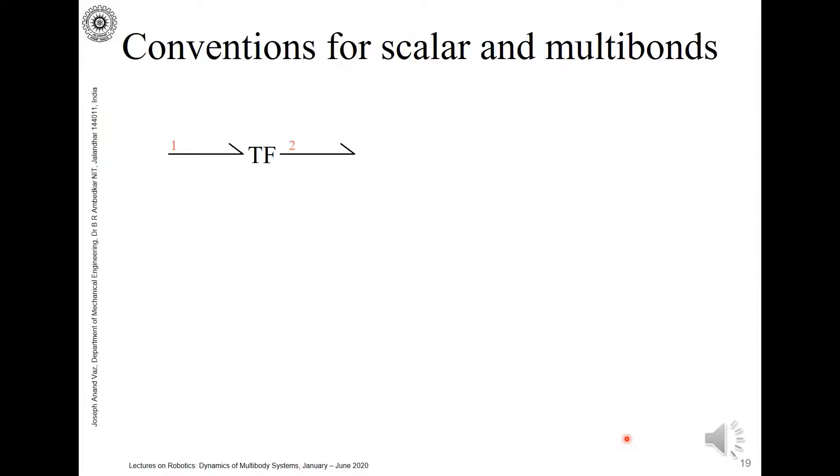We have the effort 1, flow 1, effort 2, flow 2, and let's say we have the modulus μ here. The relationship between the flows will be flow 2 is equal to μ times flow 1, given by this equation here.